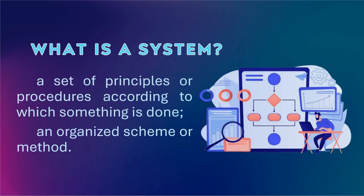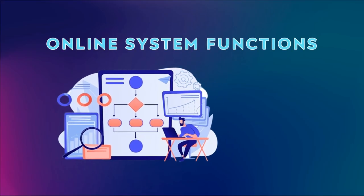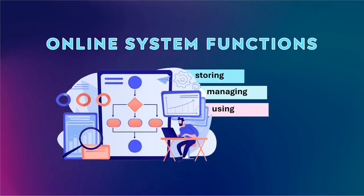Next is the System. A system means a set of principles or procedures according to which something is done — also an organized scheme or method. Examples are software applications and operating systems. Online systems are online versions of information systems, which involve the process and tools for storing, managing, using, and gathering of data.